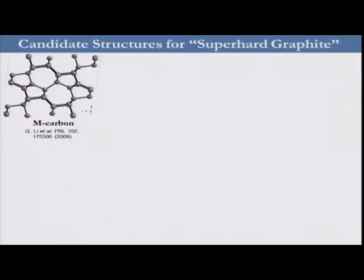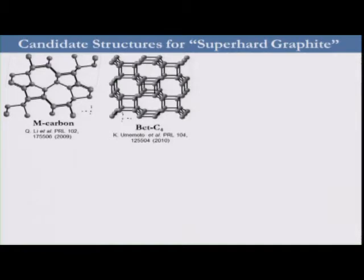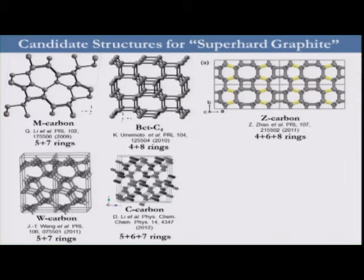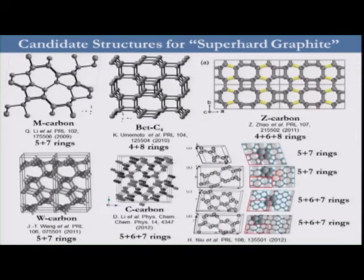We have seen in recent years many theoretical efforts that gave us a large number of predictions. In 2009, a monoclinic polymorph named M-Carbon was obtained. Shortly after, another tetragonal phase was proposed as super-hard graphite. These two phases were followed by a number of different candidates for super-hard graphite. The easiest way to describe all these structures is to look at them as a combination of odd or even-membered rings: M-Carbon is 5+7 and bct-C4 is 4+8.